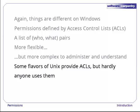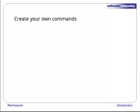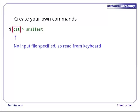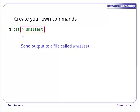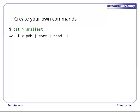Now that we understand how permissions work, it's time to start creating our own programs. Let's start by running cat > smallest. Since we didn't specify an input file, cat will read from the keyboard, and since we put > smallest at the end of the command, the computer will send cat's output to a file called smallest — this command will copy whatever we type into that file. Type in this line: wc -l *.pdb | sort | head -1. You may remember this as the pipeline we constructed in the previous episode to find the smallest molecule file.